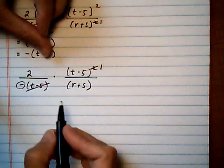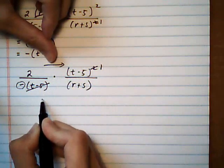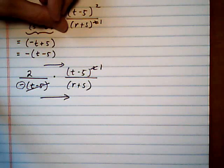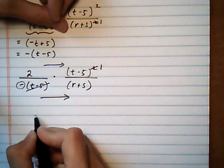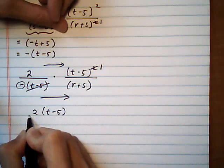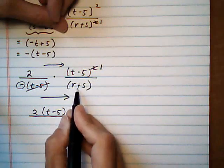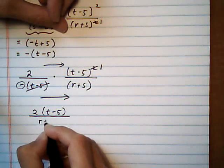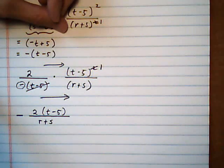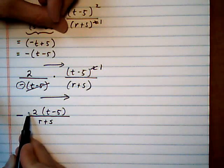All cancelling is done, so when multiplying fractions, first you cancel out whatever you can, then you multiply right across the top, right across the bottom. So our result is going to be 2 times t take away 5 all over r plus s. And I'm going to leave this minus sign here out in front of the entire fraction.